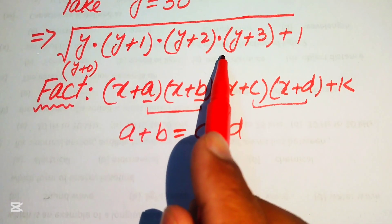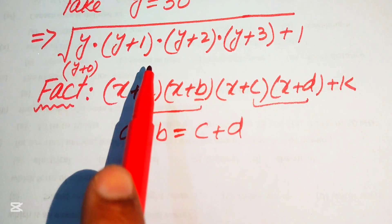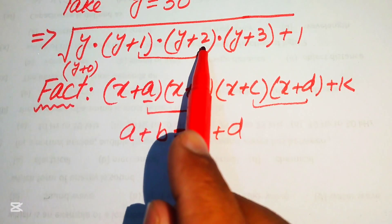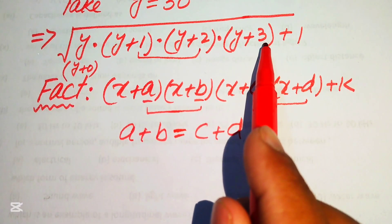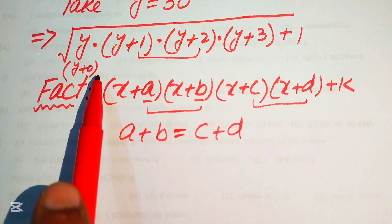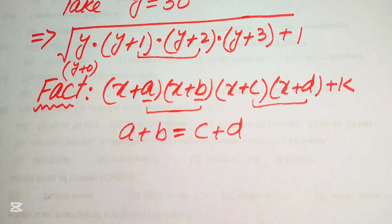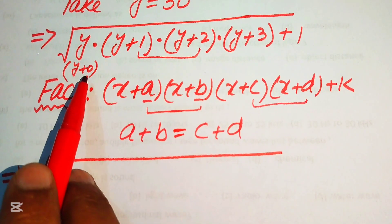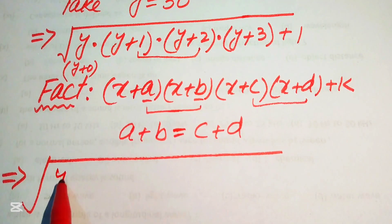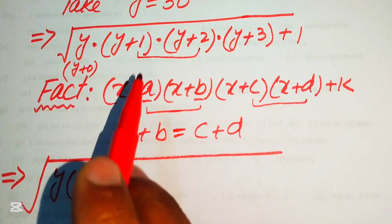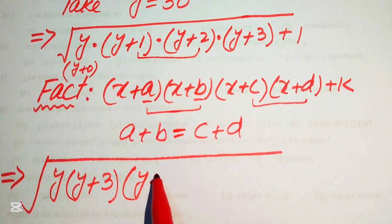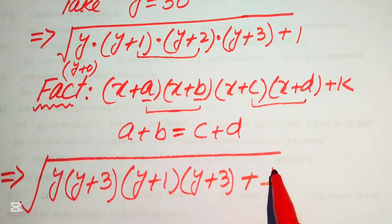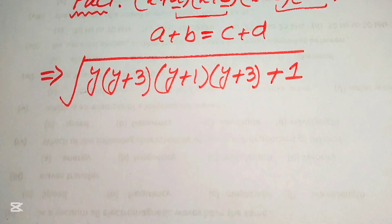Notice that 1 plus 2 equals 3, and 0 plus 3 also equals 3, so both pairs sum to the same value. We therefore rearrange: pairing y with y plus 3, and y plus 1 with y plus 2. Our expression becomes y(y+3) times (y+1)(y+2) plus 1.